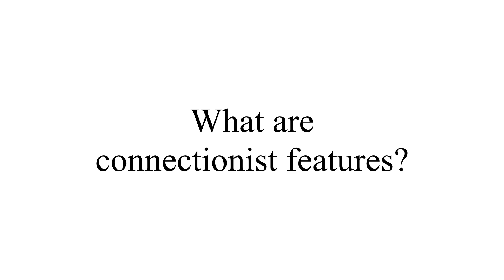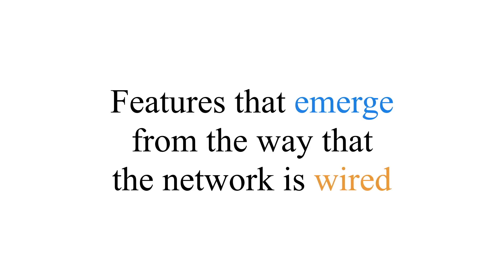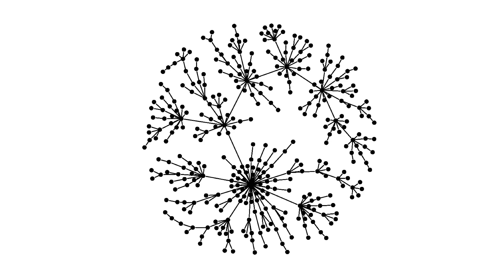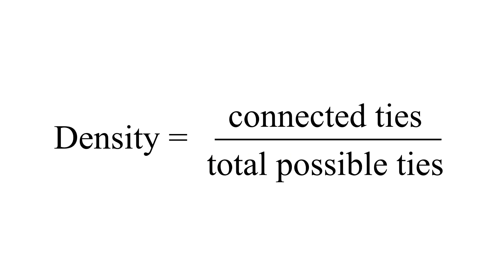To review: connectionist features are features that emerge from the way the network is wired. The first kind of measure we'd like to look at is the network's density — the proportion of connected ties over the total possible connections in the network. So, how connected is this network?